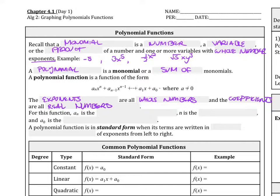For this function here, a sub n is the leading coefficient. And n is the degree. A sub 0, the number all the way at the end, is the constant, constant term.